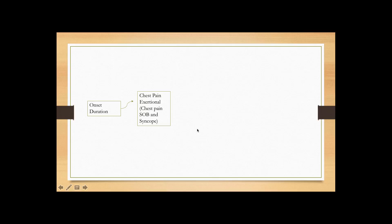The next condition is aortic stenosis. If a patient presents with exertional shortness of breath and exertional chest pain, and may or may not have syncope, you should think about aortic stenosis in addition to myocardial ischemia. Syncope is not always present — it's usually a late sign, and whenever it is present it's an indication for surgery or valve repair.